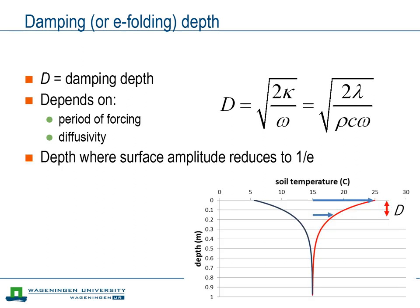The damping depth can be interpreted as an e-folding depth, the depth at which the amplitude of the temperature variation at the surface has decreased to 1/e of the surface amplitude. So at d, the amplitude is about one-third of the surface amplitude. But this implies that below the depth d, there is still a considerable variation of the temperature.